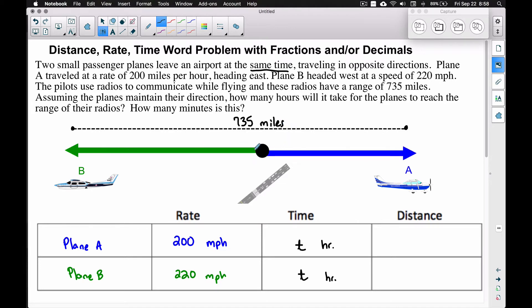If you look at the blue and the green, neither one of these is the entire distance. This black dot right here in the middle is the airport, the runway. Plane A is going to the east, Plane B is going to the west. The sum of their distances will give us this entire 735 miles. That's important to understand. That's how we're going to set up our equation.